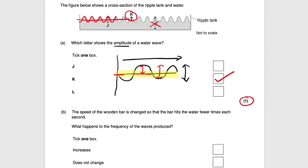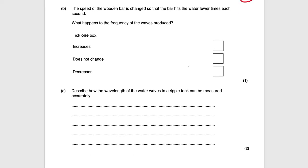Next question. The speed of the wooden bar is changed so that the bar hits the water fewer times each second. What happens to the frequency of the waves produced? If the bar hits the water fewer times, the speed has decreased because it's hitting the ripple tank fewer times per second, which means the frequency is going to decrease. So the answer to this is decreases for one mark.